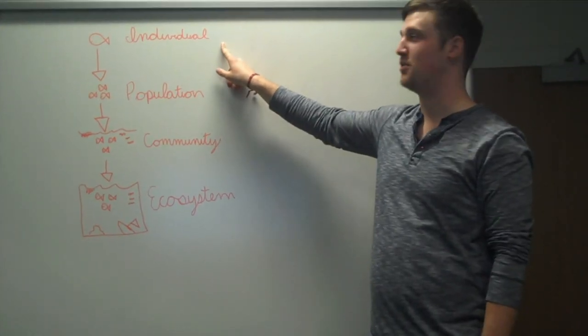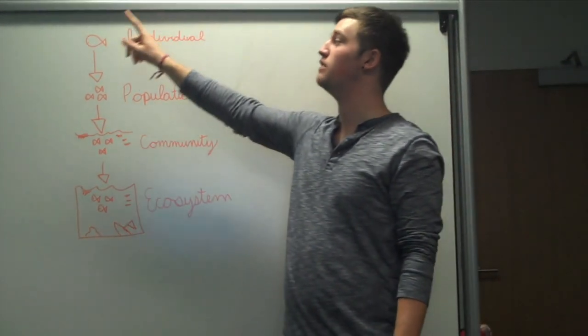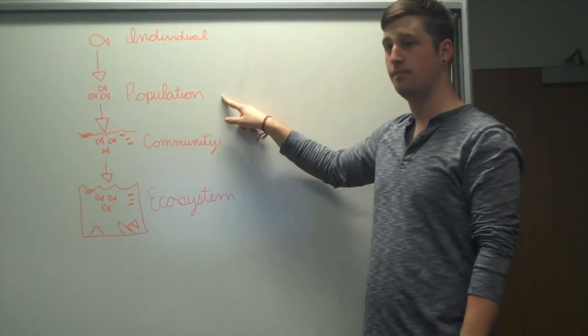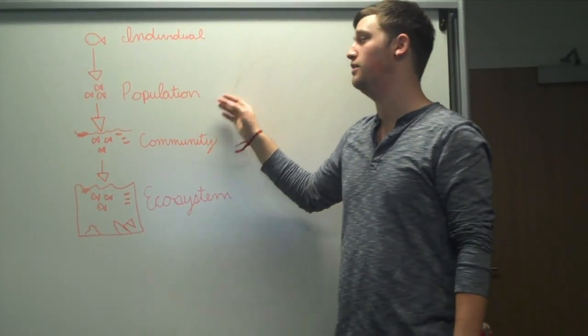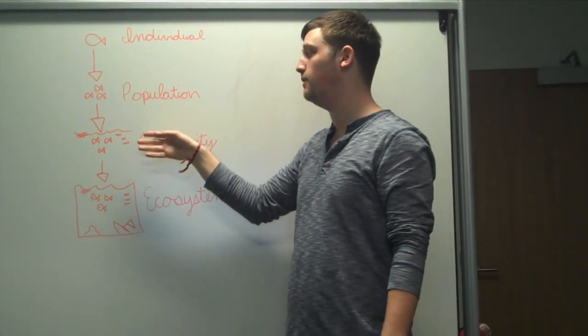But what do the fish behind me have to do with the relationship between evolution and ecology? One fish makes up an individual. When we have lots of these fish of the same species, we make up a population. When we start mixing populations, like populations of fish and water fleas and algae, we make up a community.